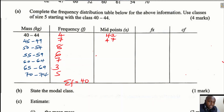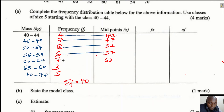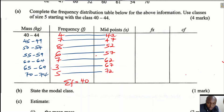Since the class size is uniform at 5, you simply add 5 to each successive midpoint. So from 42, the midpoints are 47, 52, 57, 62, 67, and 72. The next column is fx, which means you multiply the frequency column by the midpoint column for each class.